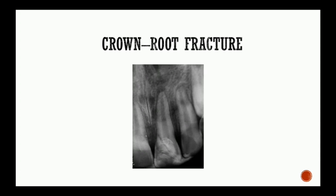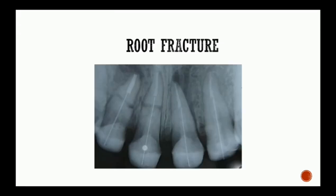Crown-root fracture involves the enamel, coronal and radicular dentine, and cementum. Lastly, root fracture involves the radicular dentine, cementum, and the pulp.